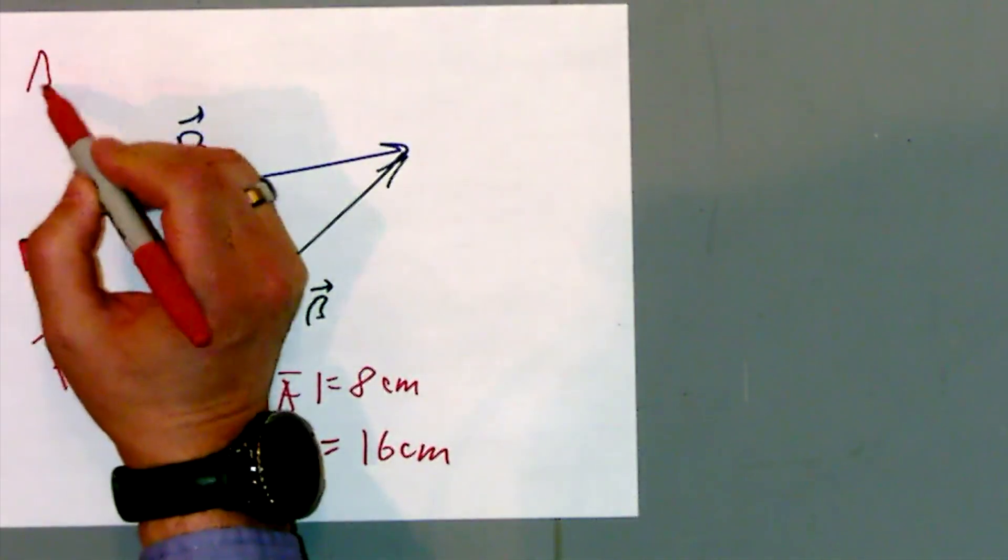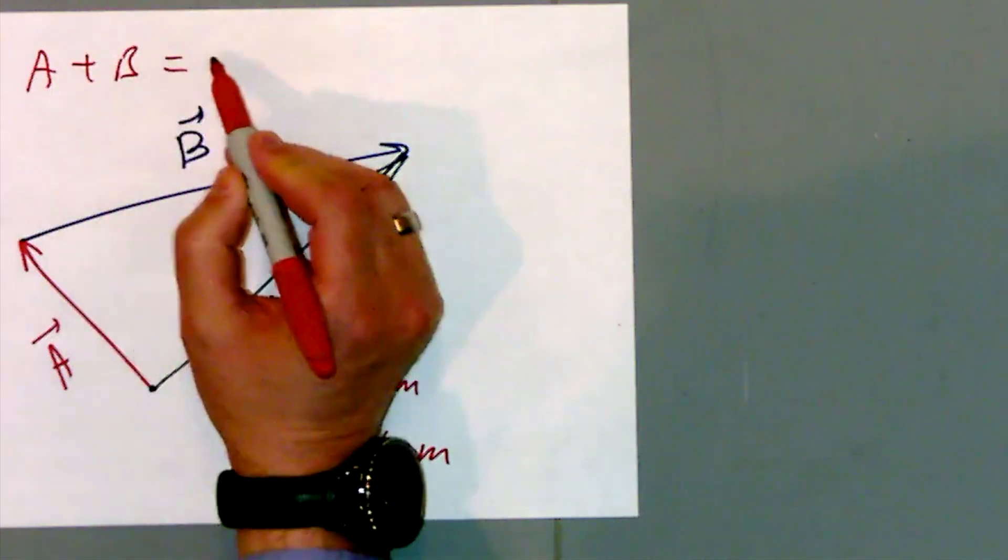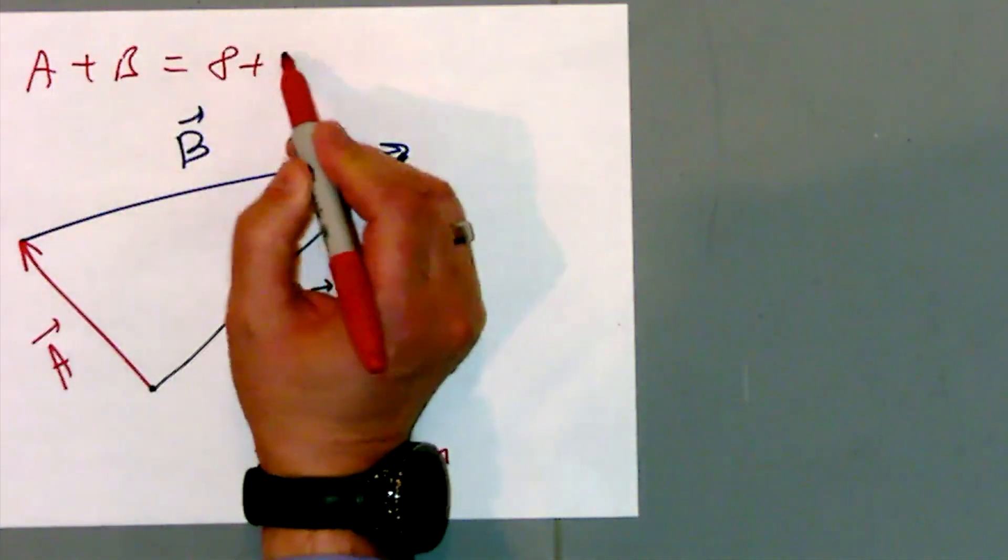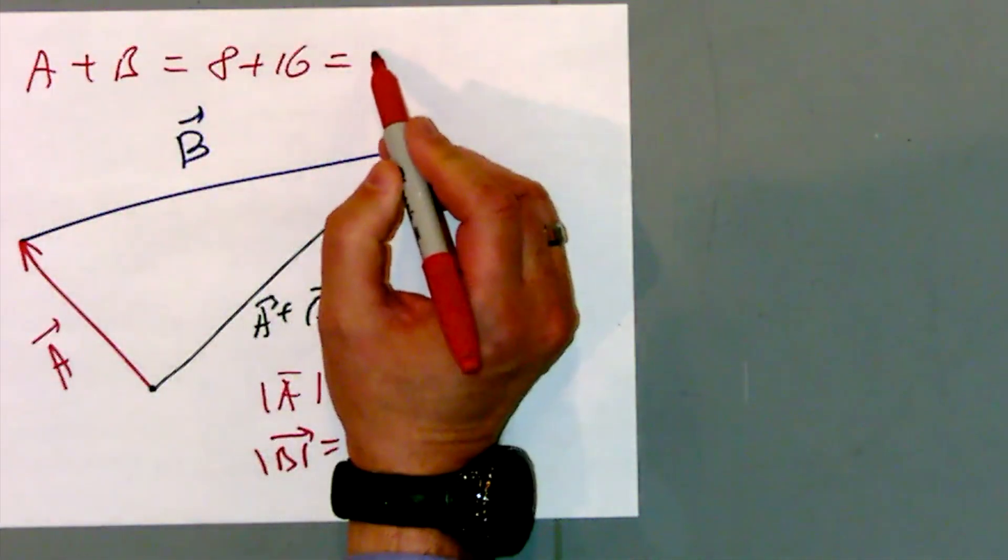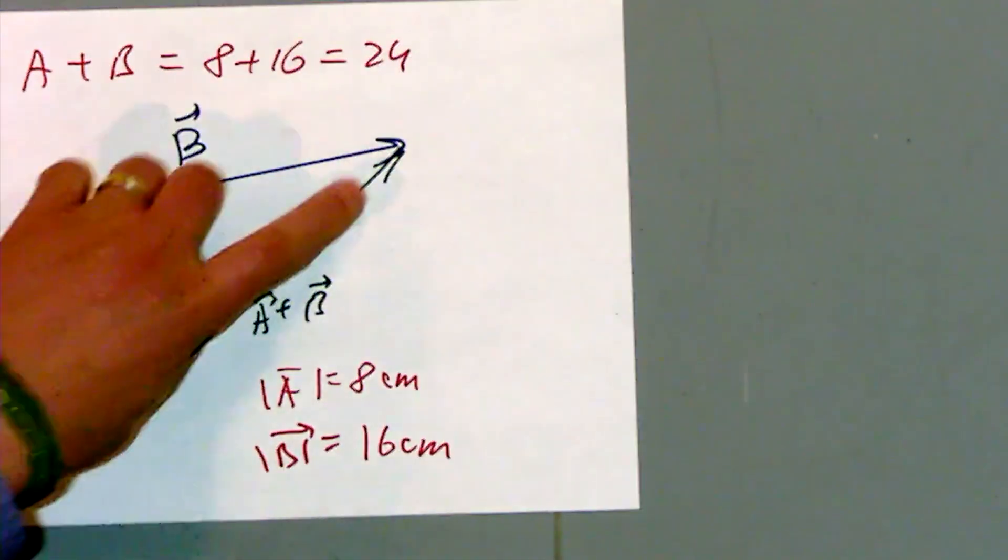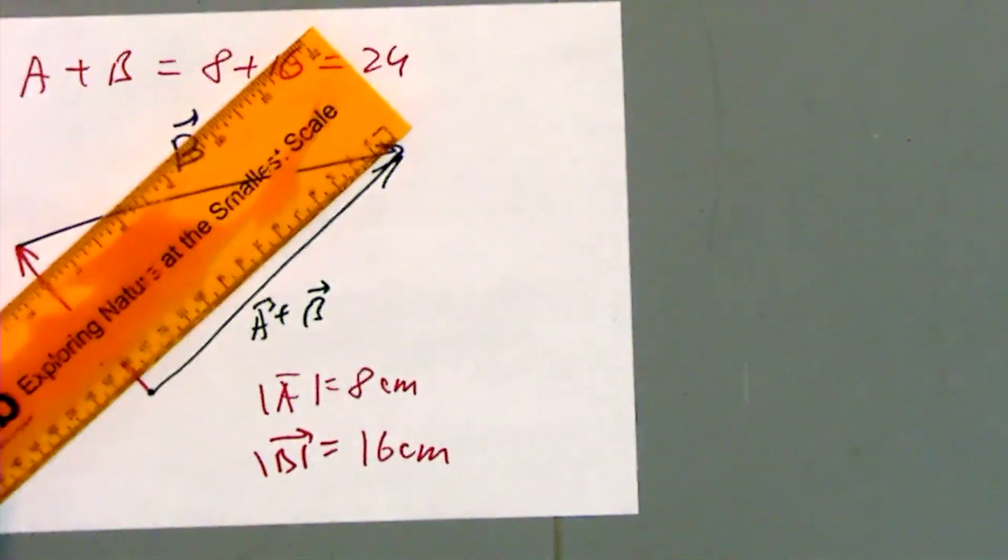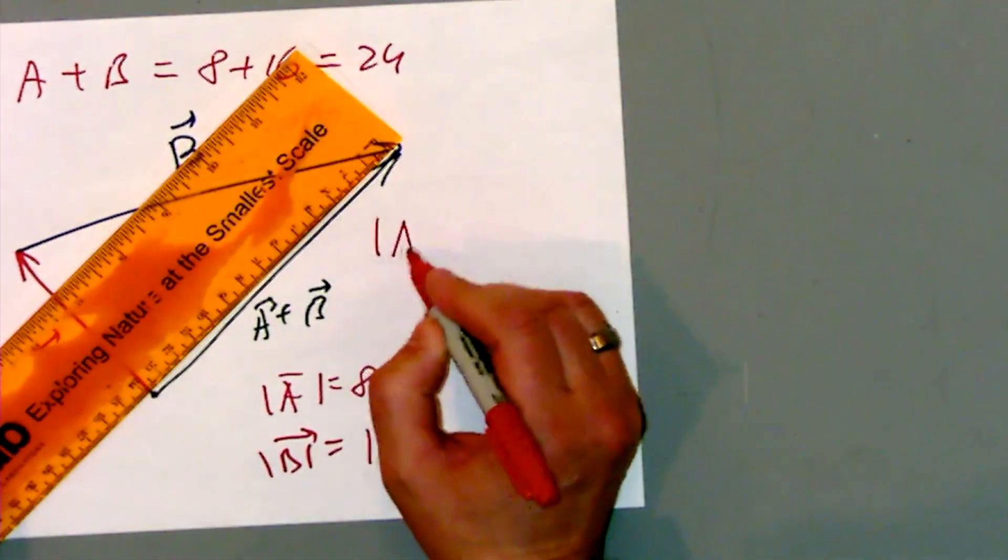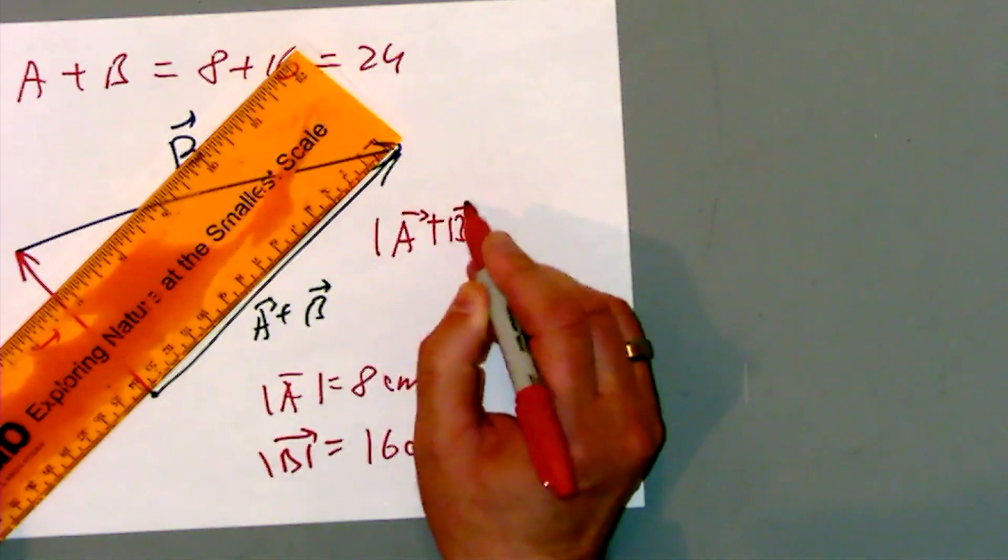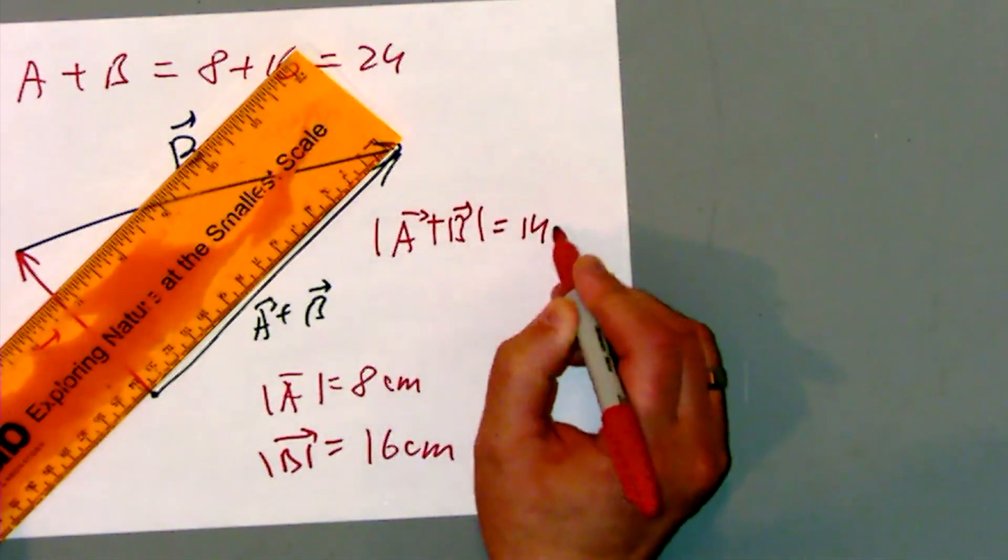So if you write A plus B equals 8 plus 16, that will give you 24. Does it mean this black arrow is 24 centimeters long? Of course not. You can measure the magnitude of A plus B actually is just 14 centimeters.